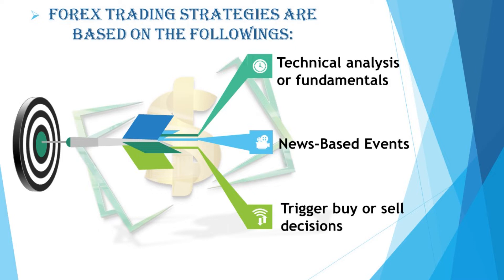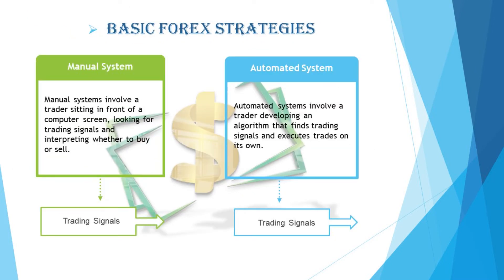Basic forex strategies are divided into two categories: manual systems and automatic systems. In a manual system, a trader sits in front of a computer screen, looking for trading signals and interpreting whether to buy or sell. In an automatic system, a trader develops an algorithm that finds trading signals and executes trades on its own.